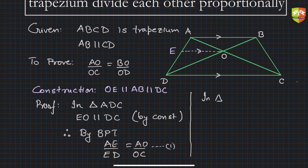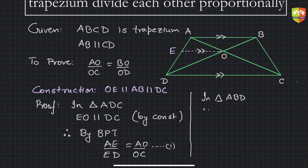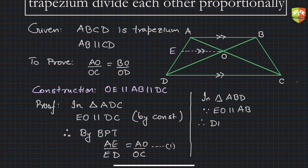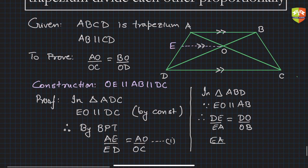Now consider the other triangle. OE is parallel to AB as well, so in triangle ABD — where D is the vertex — since OE is parallel to the base AB, by BPT we get DE upon EA is equal to DO upon OB. Reciprocating, EA upon DE is equal to OB upon OD. Let this be equation two.